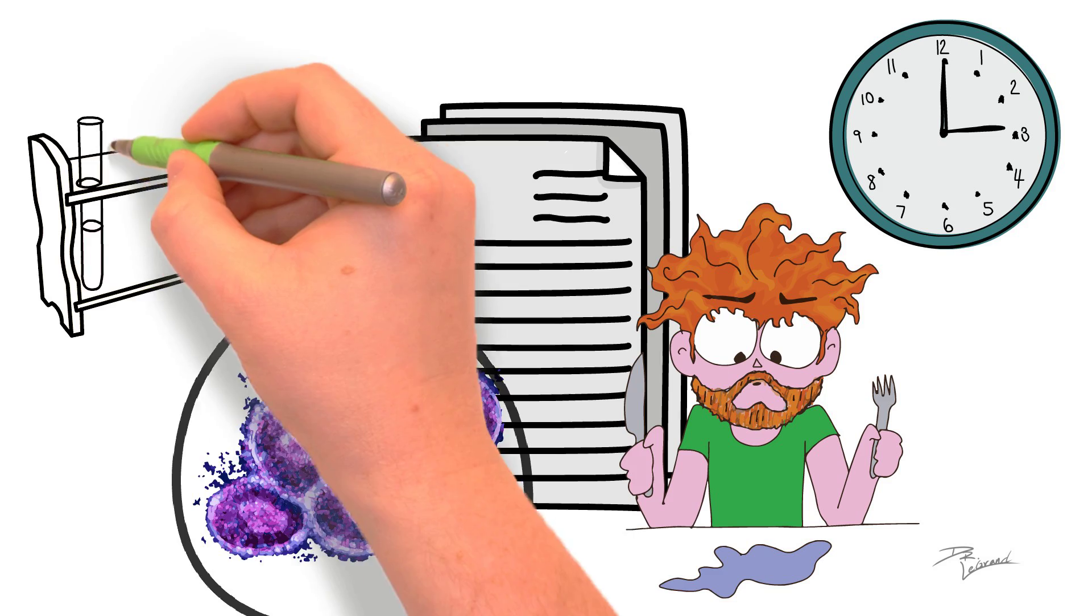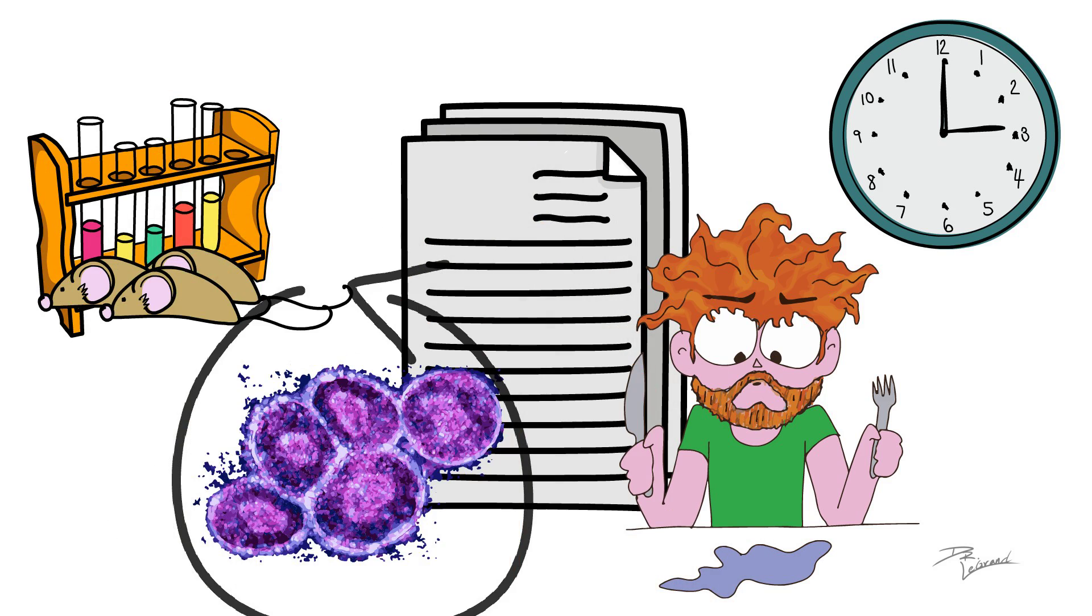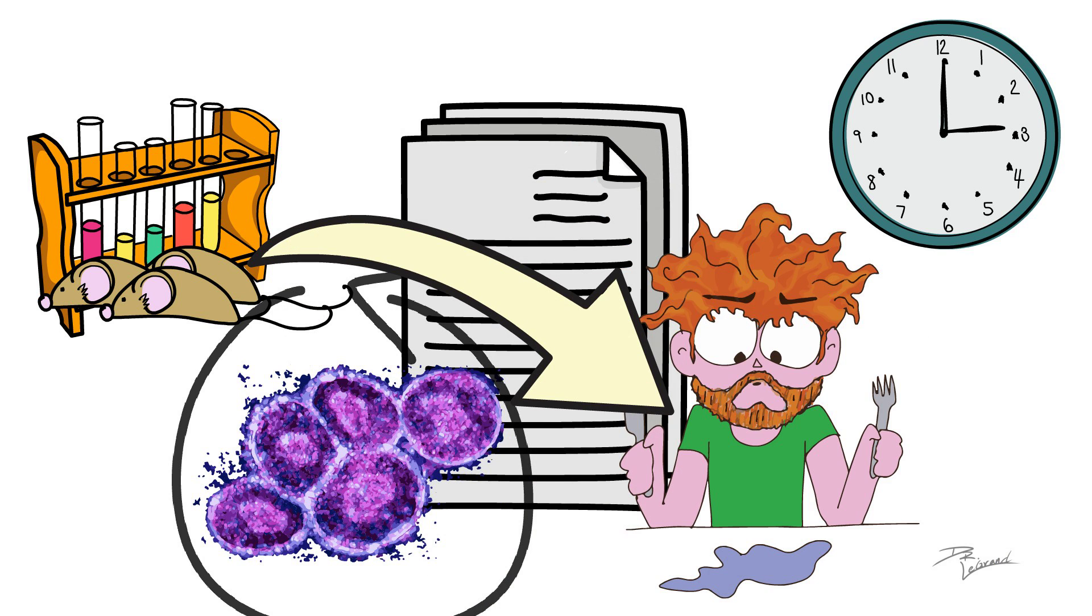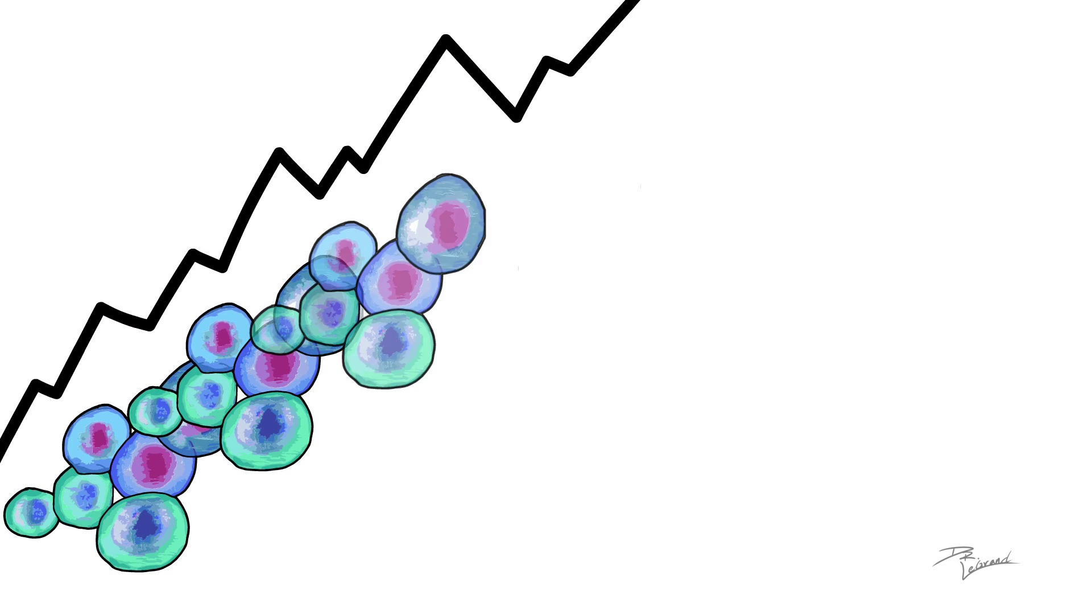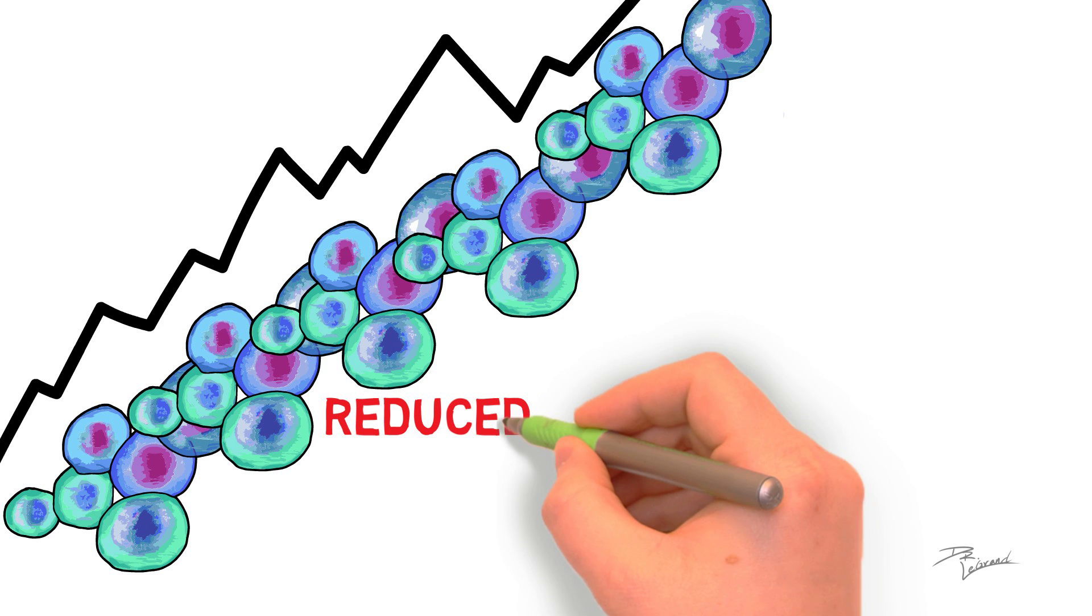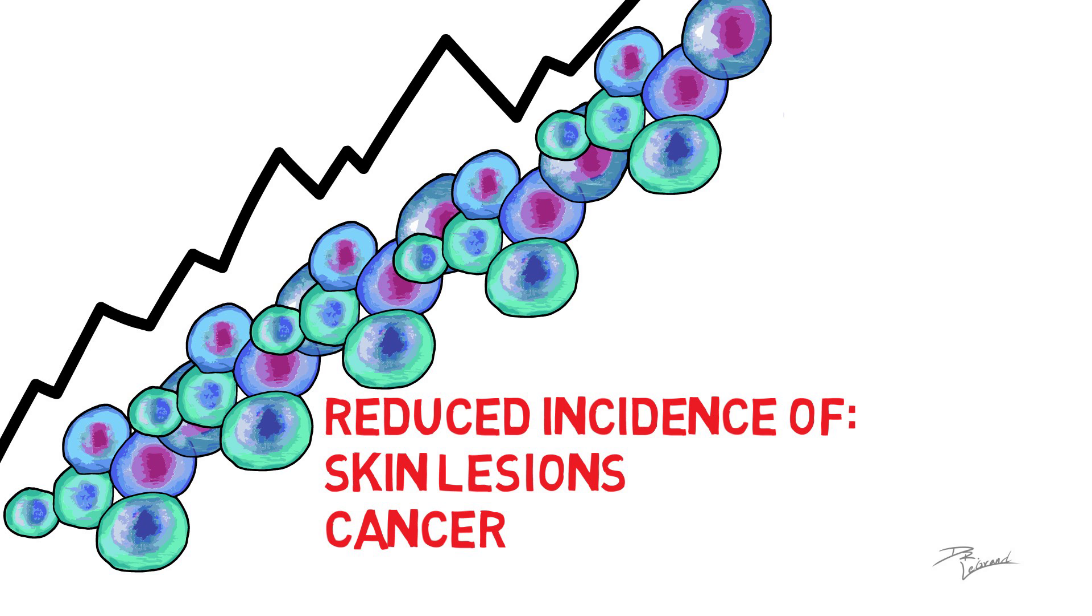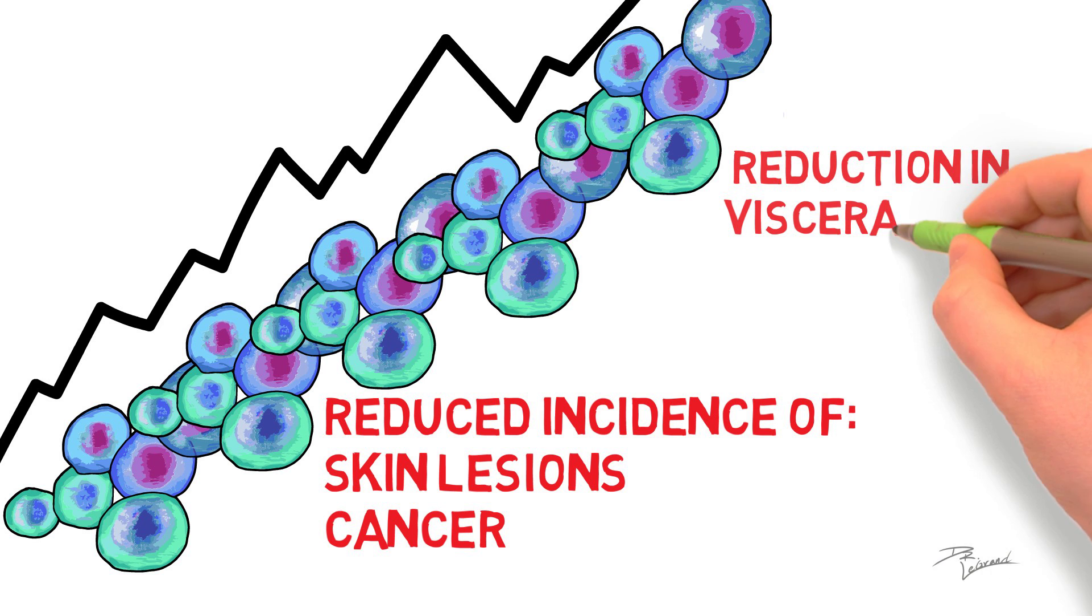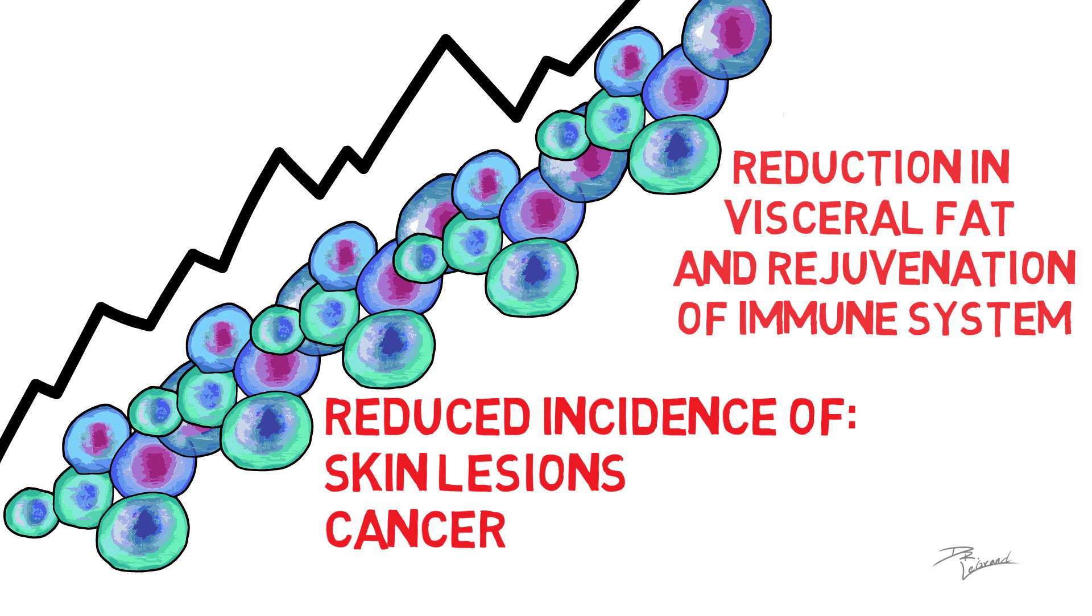This study was conducted on mice, which leads to a call for human studies as well. A diet that mimicked prolonged fasting was introduced to the mice. An elevation in stem cell quantity, function, and regeneration was noted. This led to a reduced incidence of skin lesions and cancer, a reduction in visceral fat, and a rejuvenation of the immune system in the study subjects.